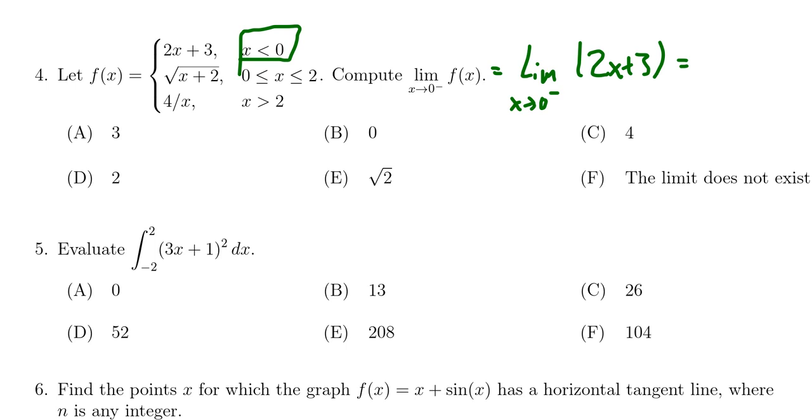That is, we can plug in x equals zero. We get two times zero plus three, which is then going to give us three. So we see that the correct answer would then be choice A.